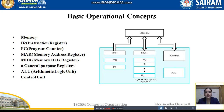The processing unit consists of three different units within it: a memory unit, control unit, and ALU unit. The ALU unit and control unit together form the processor, and the memory unit is used for storage purposes.